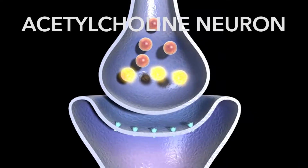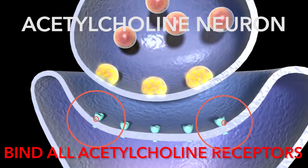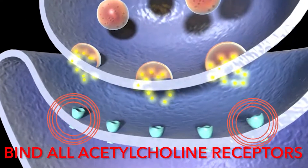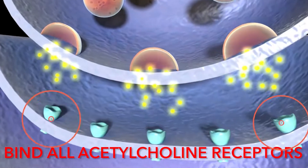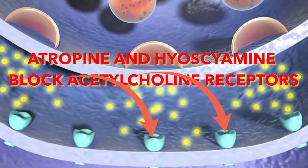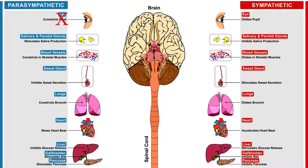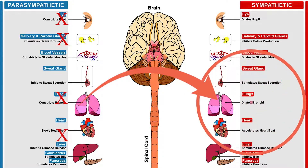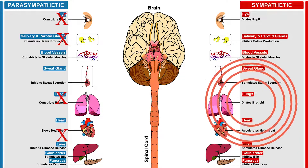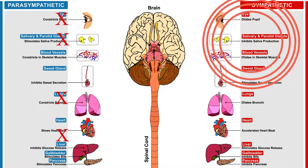Atropine and hyoscyamine are competitive antagonists of the muscarinic acetylcholine receptors — types M1, M2, M3, M4, and M5. So atropine competitively blocks the acetylcholine receptors in the entire parasympathetic nervous system. Another way to look at that is that atropine and hyoscyamine allow the sympathetic nervous system to dominate. The way to remember the actions and side effects of these drugs is to remember what the sympathetic nervous system does.